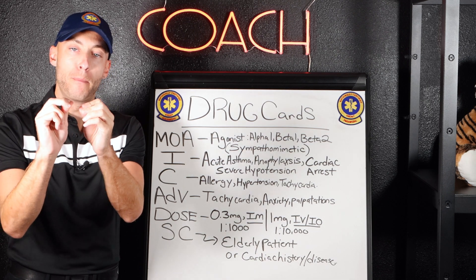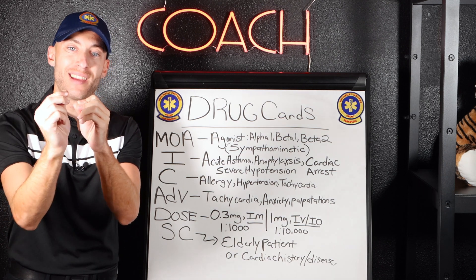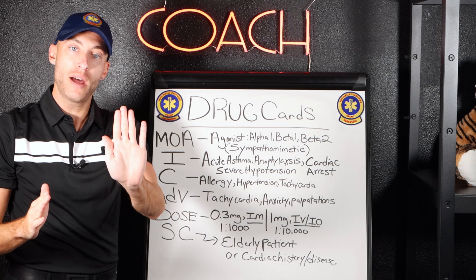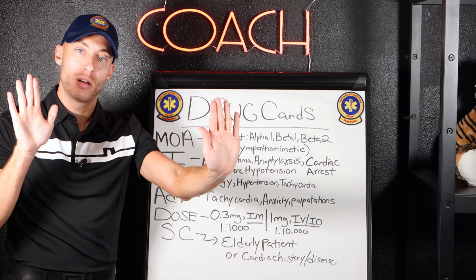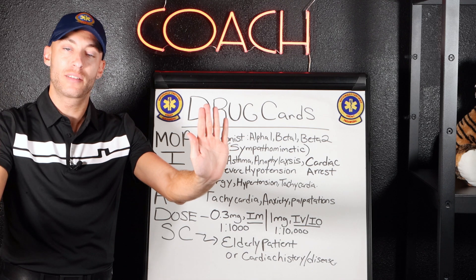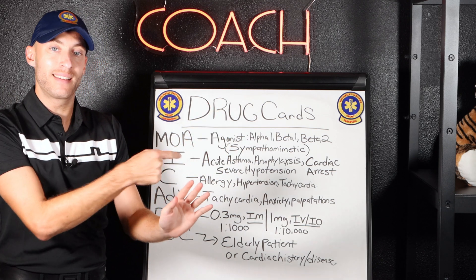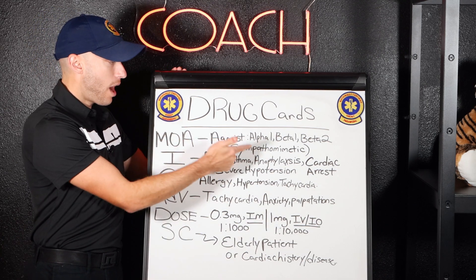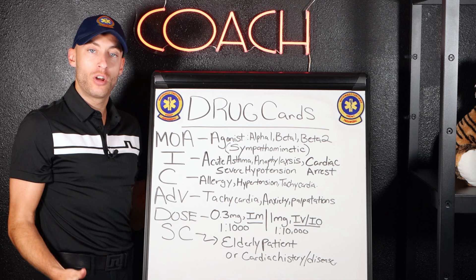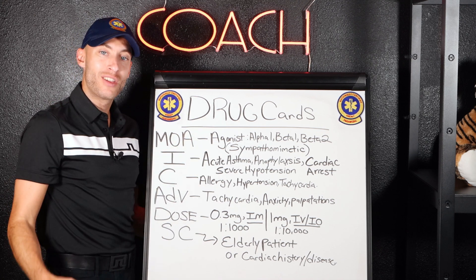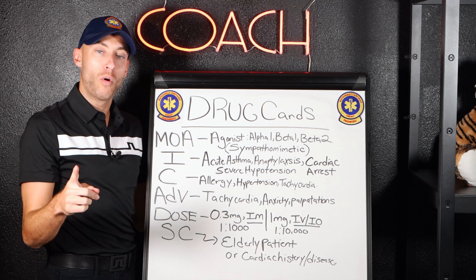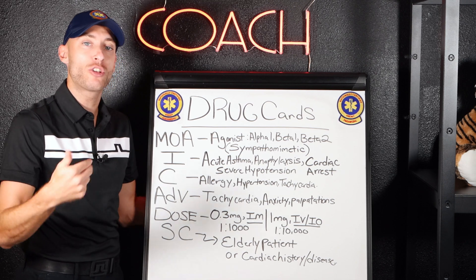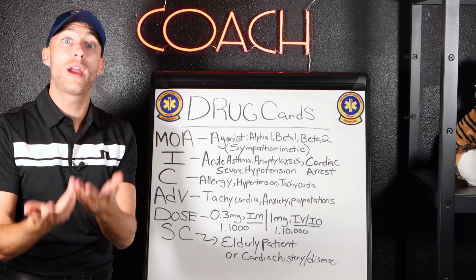An agonist is something that binds to a receptor and activates it. An antagonist blocks a receptor — so epinephrine is an agonist, while Lopressor is an antagonist. Epinephrine is going to activate and bind those receptors. We know alpha-1 is going to cause massive vasoconstriction, thus increasing blood pressure. Beta-1 — we have one heart — it's going to increase heart rate and contractility, which is the strength of contractions.